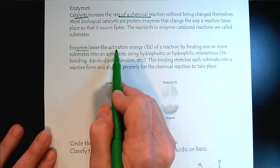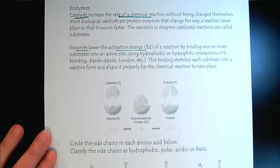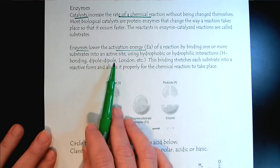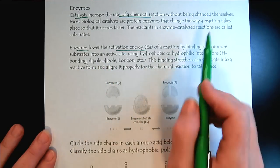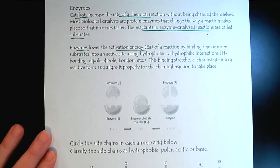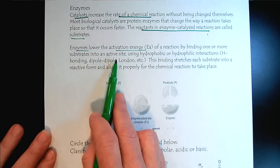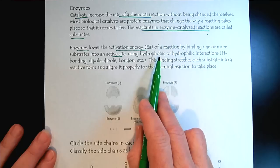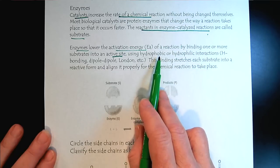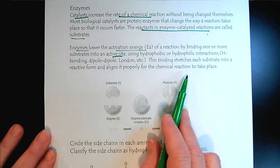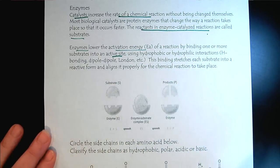Enzymes are catalysts. How do they work? They work by lowering the activation energy, and they do that by binding one or more substrates into an active site. The reactants of an enzyme-catalyzed reaction are called the substrate. The reactants are pulled and stretched in the active site of an enzyme using the interactions we've learned about in secondary and tertiary structure — hydrophobic and hydrophilic — and this lowers the activation energy to increase the reaction rate.